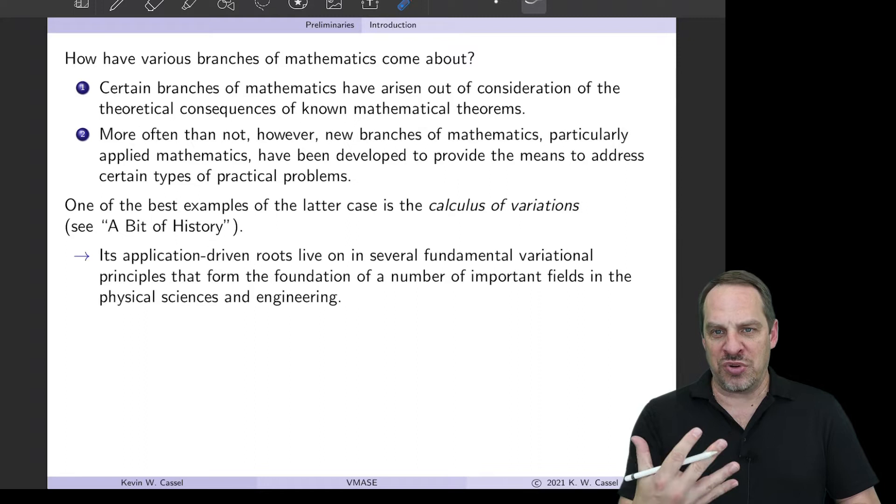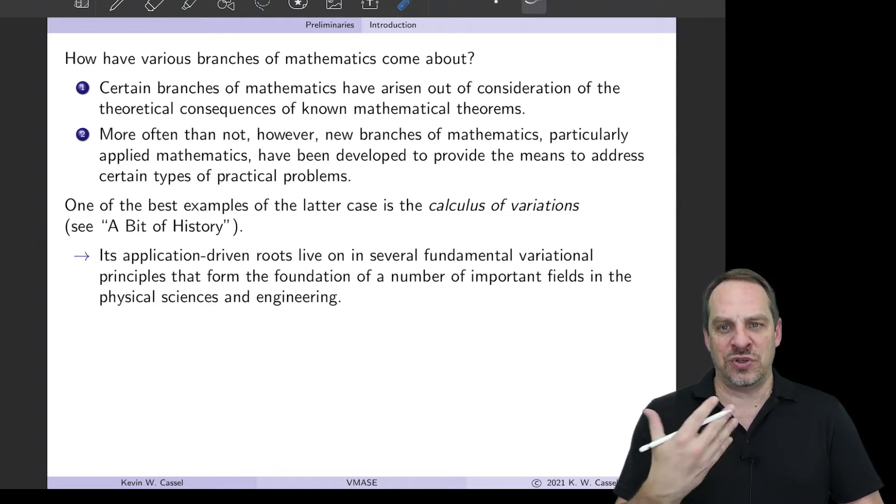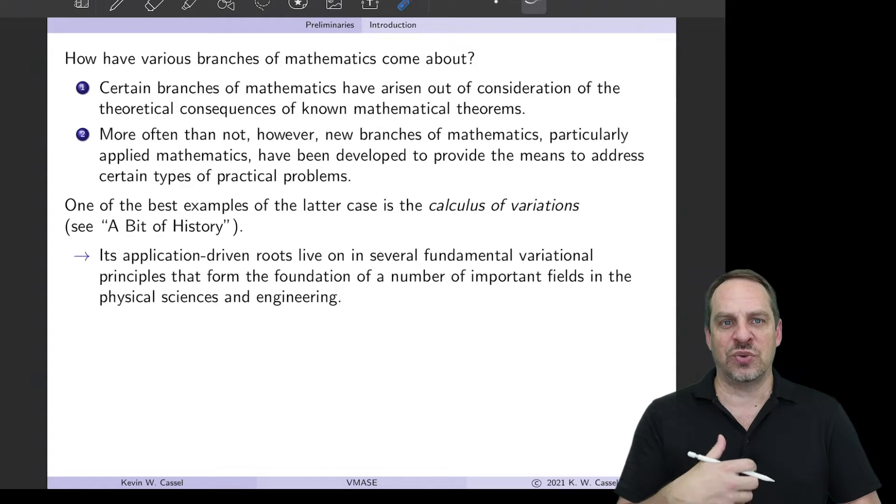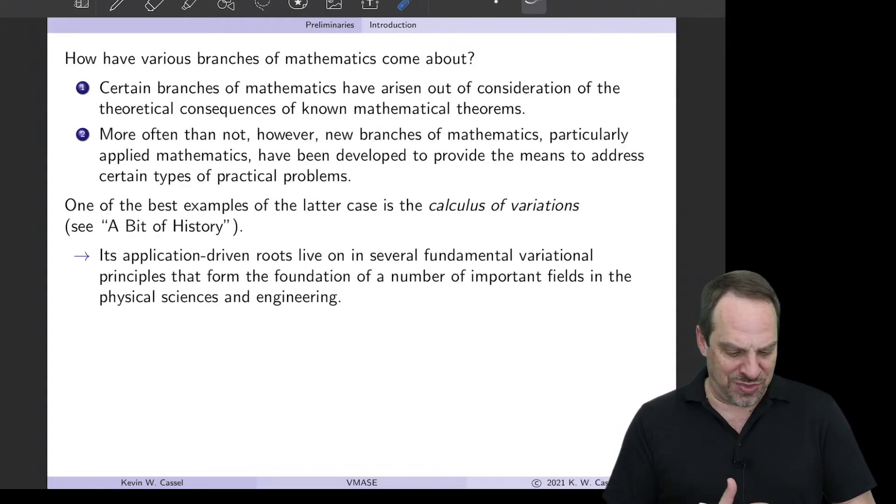More often than not, however, new branches of mathematics have come about because applied mathematicians, smart individuals, scientists ran into a problem. They're trying to explain something, understand something, and they didn't have the mathematics to do it. They didn't have the mathematical language vocabulary to express or understand or predict some physics, and so they ended up developing the mathematics that was necessary to do that.